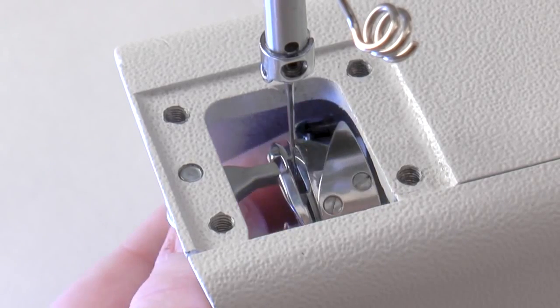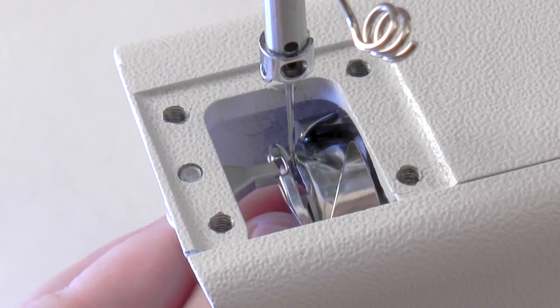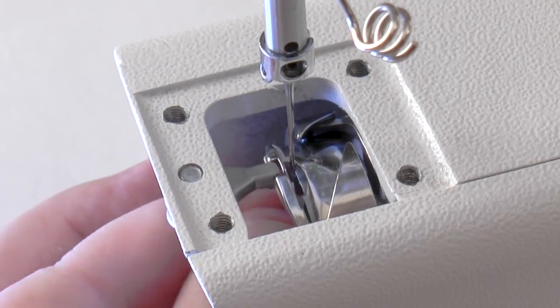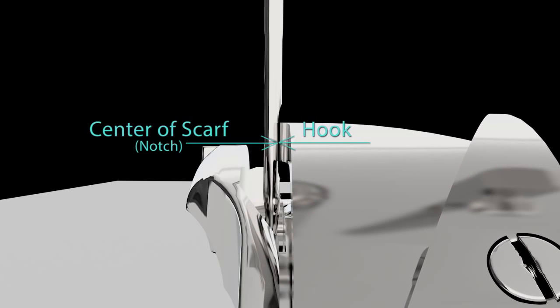With the set screws loosened, the hook assembly can now be rotated side to side and adjusted back and forth. Position the hook so that it is centered with the needle scarf and as close as possible to the needle without touching it.